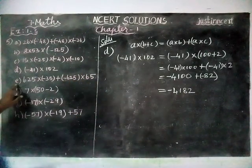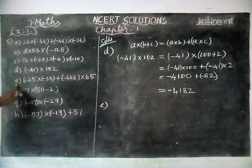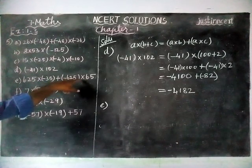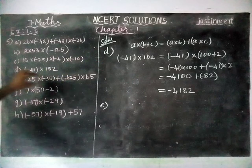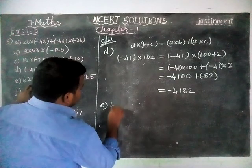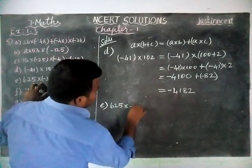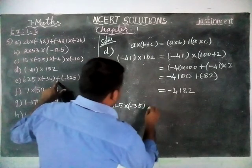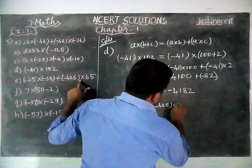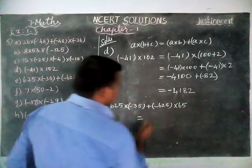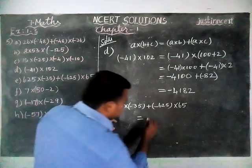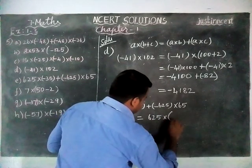Option E is the same model: (-625) × (-35) + (-625) × 65. This is the distributive property of multiplication over addition. In this expression, 625 is common, so we are going to take it outside.